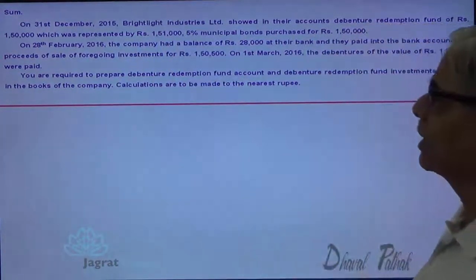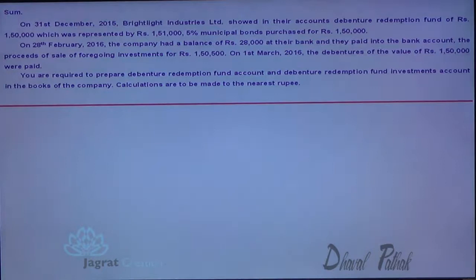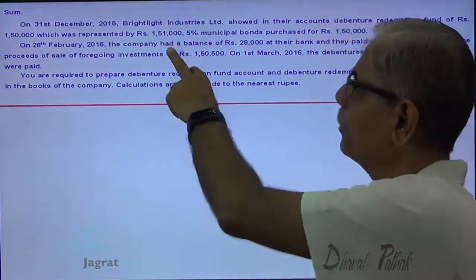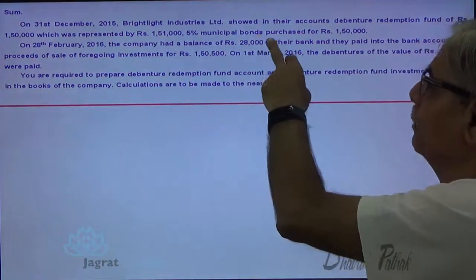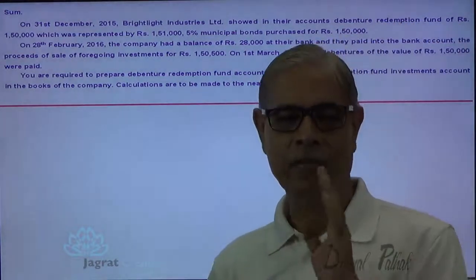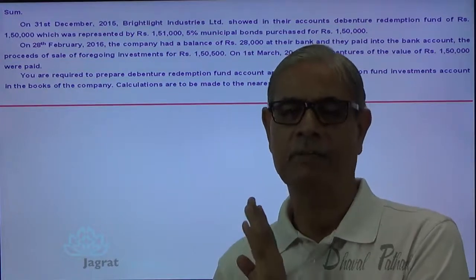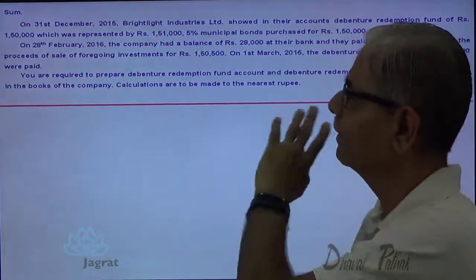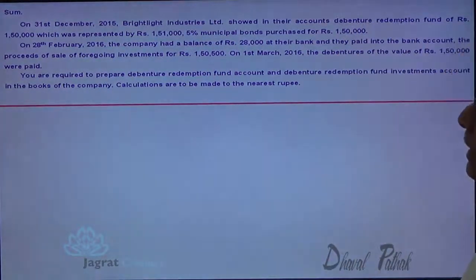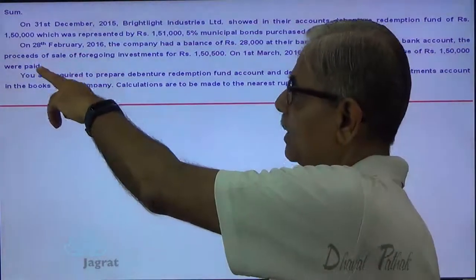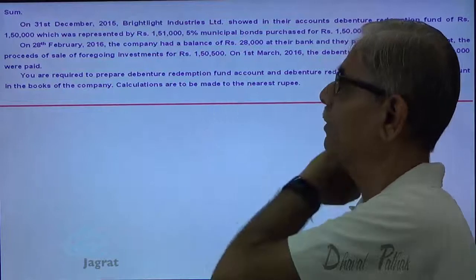On 31st of December 2015, Bright Light Industries showed their accounts. Debenture redemption fund is ₹150,000, represented by 5% municipal bonds with a face value of ₹151,000, purchased for ₹150,000. On 28th of February, the company had a bank balance of ₹28,000 and paid into the bank account the proceeds of sale of the foregoing investment: ₹150,500.